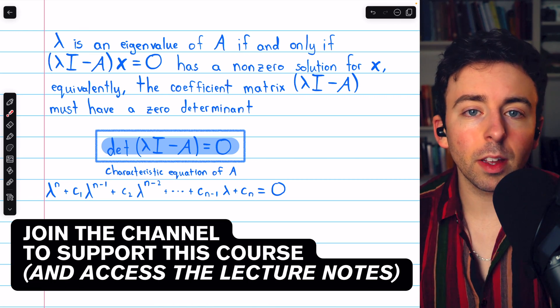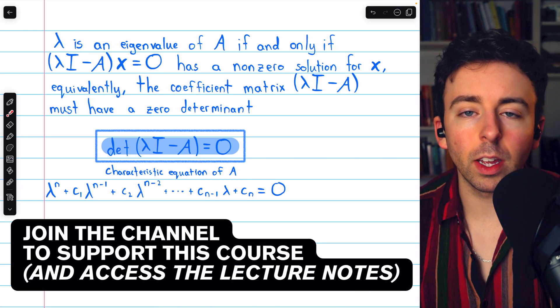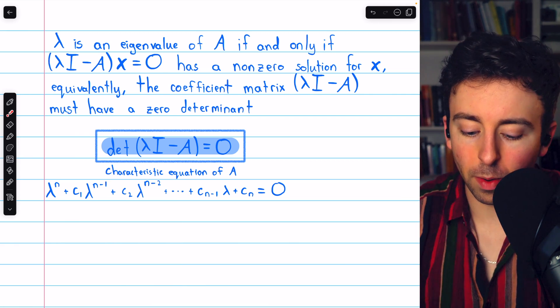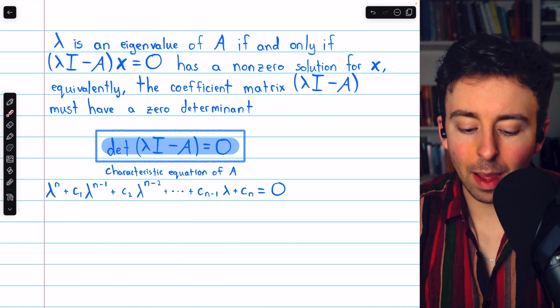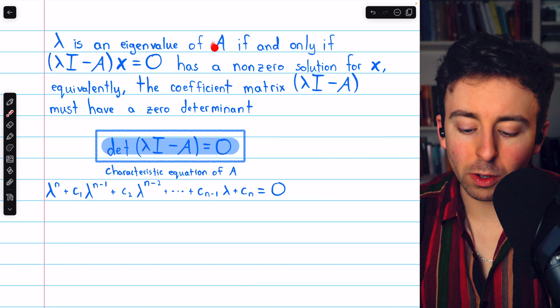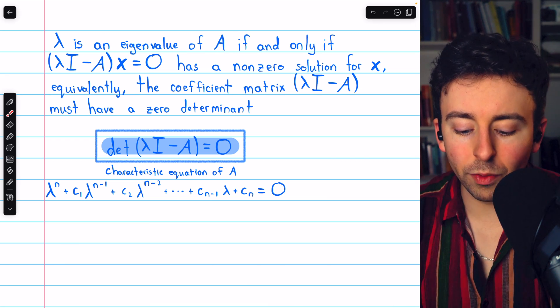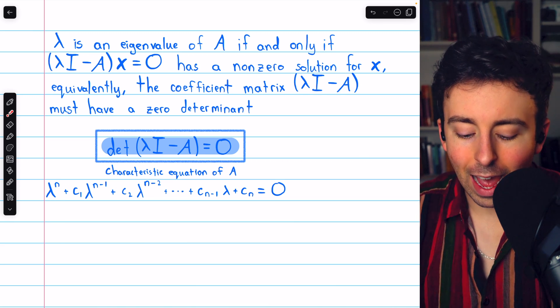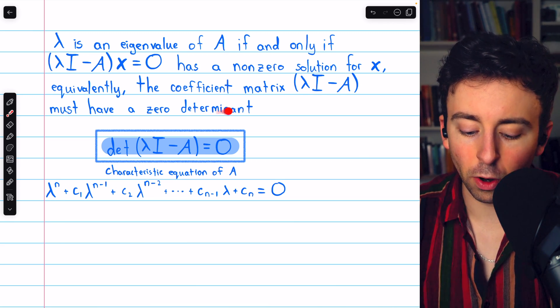We're going to go over two examples of finding the characteristic equation of a 3x3 matrix. The characteristic equation comes from this fact, that lambda being an eigenvalue of a matrix A is equivalent to this coefficient matrix having a zero determinant.